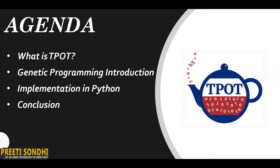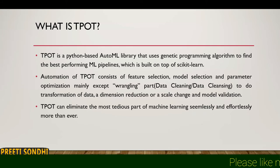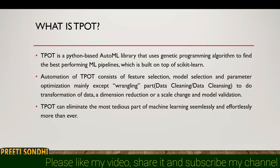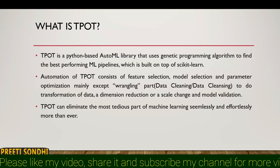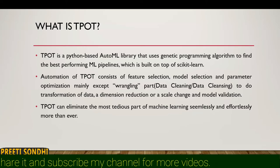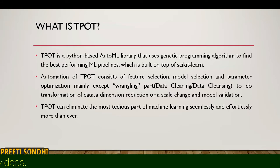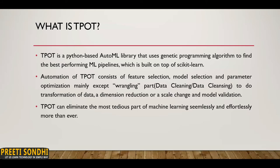TPOT is a Python-based AutoML library that uses genetic programming algorithms to find the best-performing ML pipelines. It is built on top of scikit-learn. This might raise a question in your mind — what is genetic programming? We will discuss that in this video.